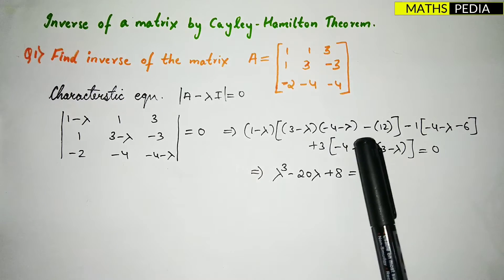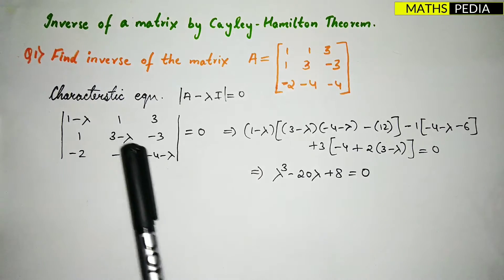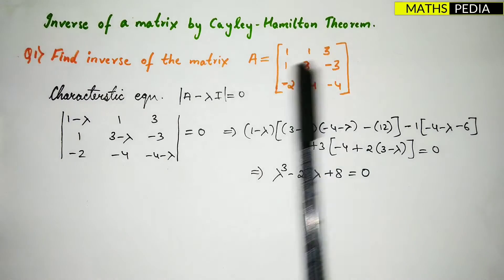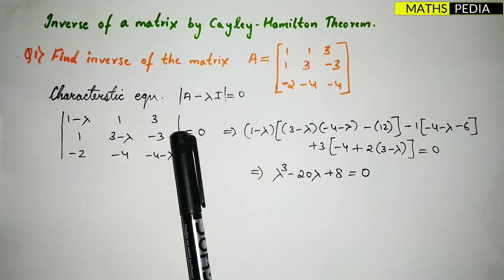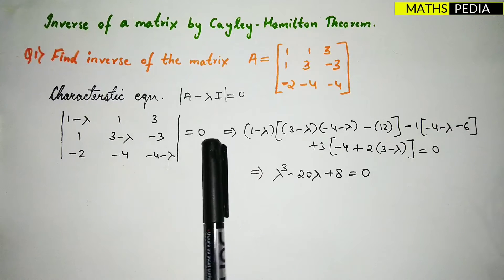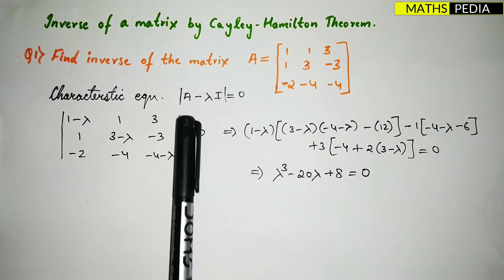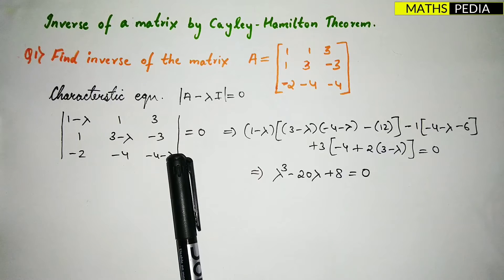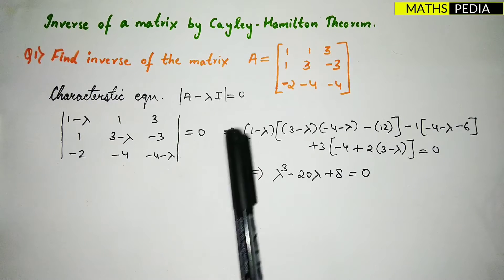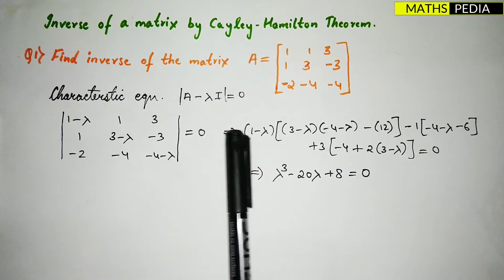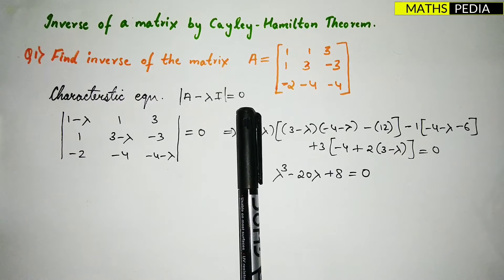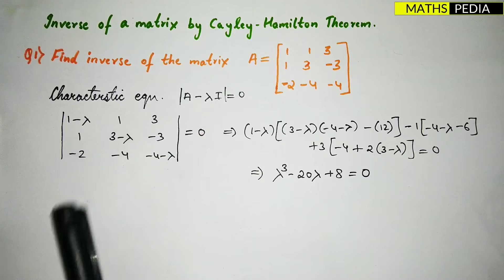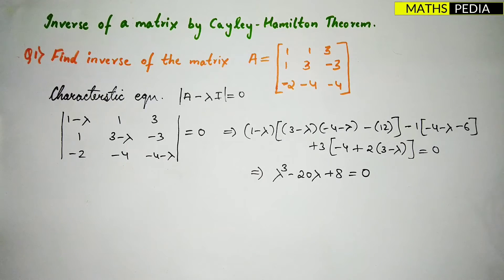The first step is to find the characteristic equation of the given matrix. We can find the characteristic equation by the general definition, which is the determinant of (A minus λI), where λ will be the eigenvalue and I is the identity matrix, equated to zero. From that you will get the characteristic equation.